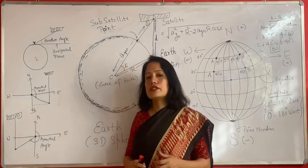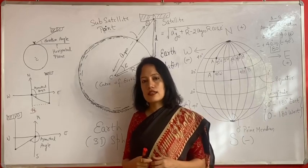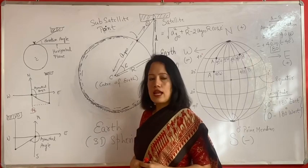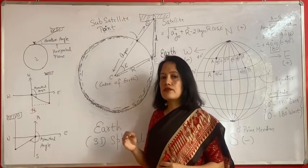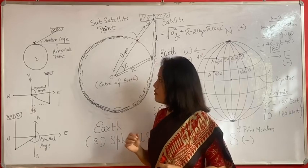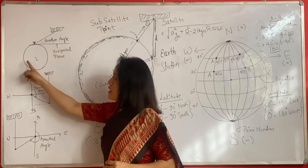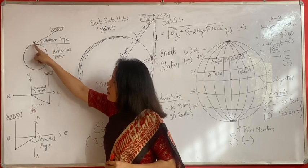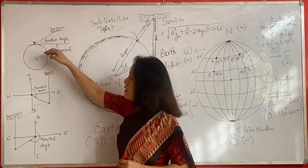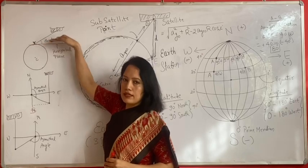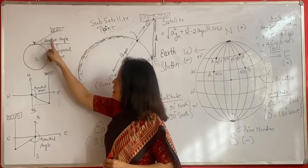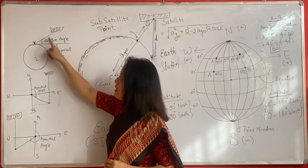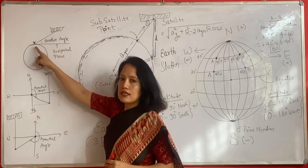Now we are in a position to define the look angles. The two angles are the elevation angle and the azimuthal angle. The elevation angle is defined as the angle between the local horizontal plane and the line joining the satellite and the Earth station.